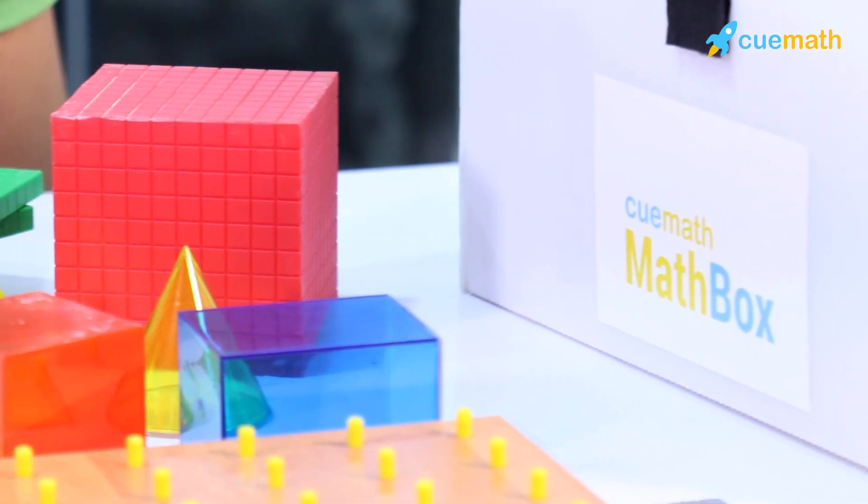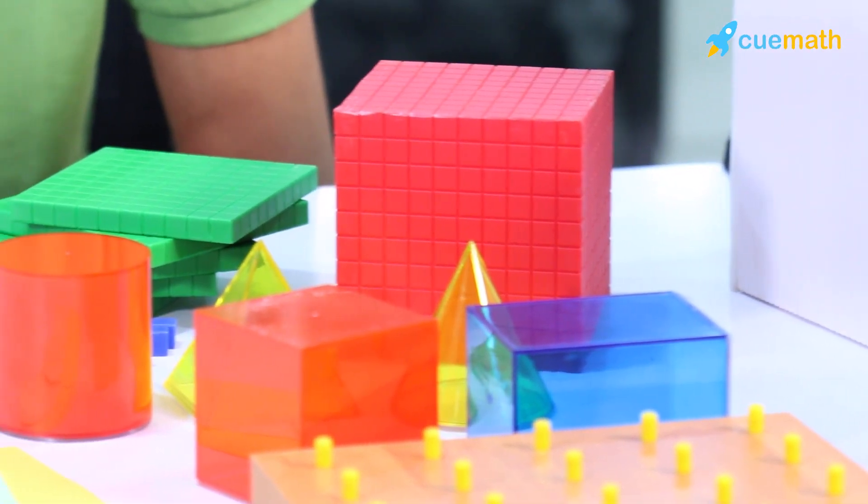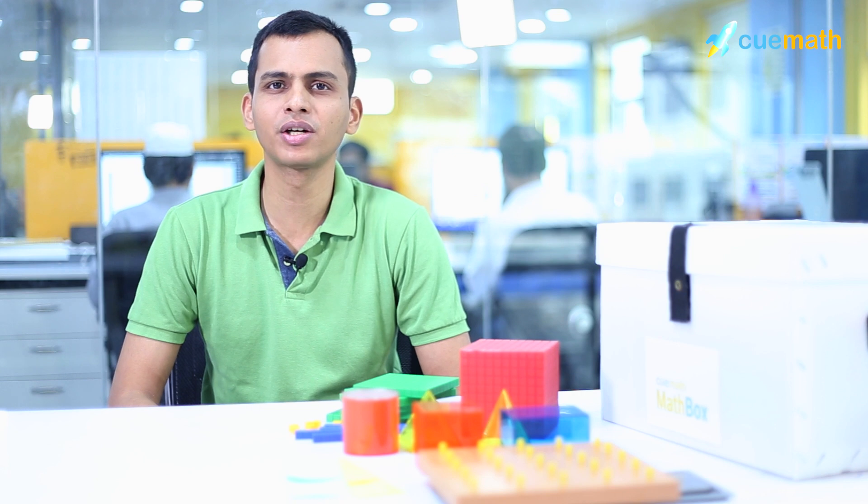In school, students are often asked to memorize properties of solid shapes - shapes like spheres, cylinders, cubes, cones, etc. For some reason, they're expected to memorize formulas of the surface area of a cylinder, which is 2πr(r+h). They're never given an opportunity to explore these shapes and discover these formulas for themselves.